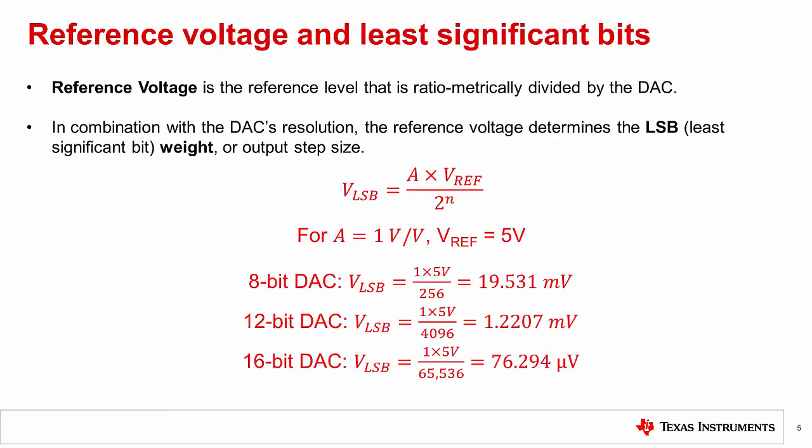Now let's address the reference voltage and least significant bit size. A reference voltage is the reference level that is ratio-metrically divided by the DAC. Some DAC's output range varies from 0 volts to the reference voltage, while others have additional gain provided by the output buffer. In combination with the DAC's resolution, the reference voltage determines the LSB, or least significant bit weight, or output step size. This is generally expressed as VLSB.